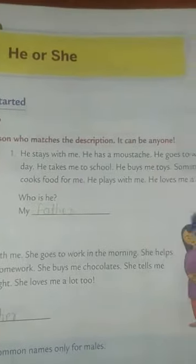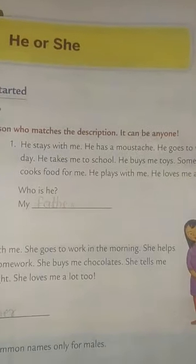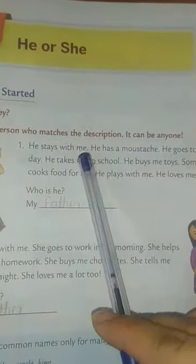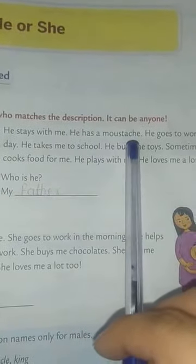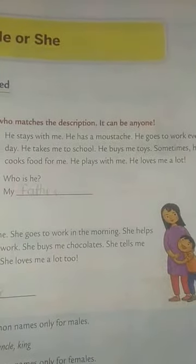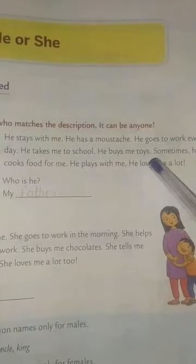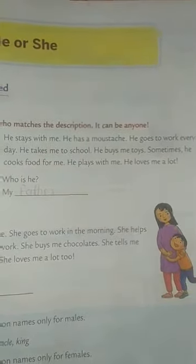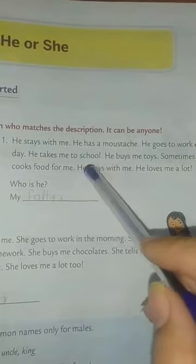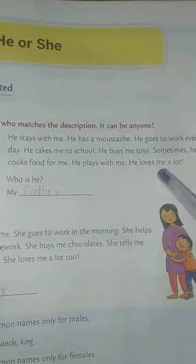The person who matches with the description — write it, it can be anyone. First: he stays with me. He is a moustache user — unki moustache hain. He goes to work everyday. He takes me to school. He buys me toys. Sometimes he cooks food for me. He plays with me.